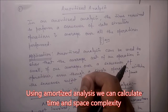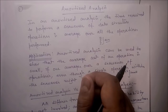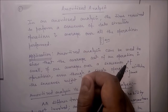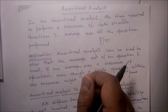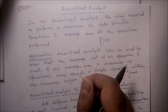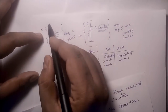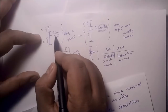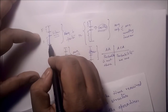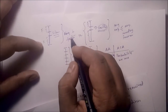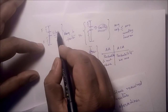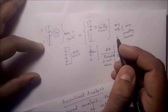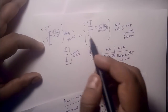When do we use amortized analysis? It is used for algorithms where infrequent operations are very slow but most operations are faster. In amortized analysis, we analyze the sequence of operations and guarantee a worst-case average time which is lower than the worst-case time of a particular expensive operation. So if you take the average time complexity, it will be faster than that particular slow part.